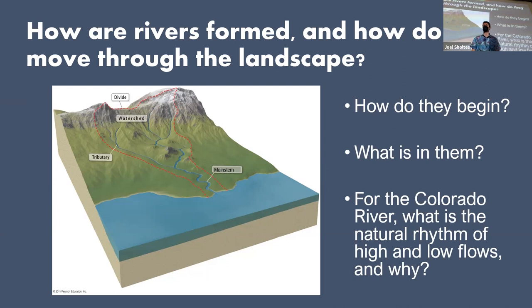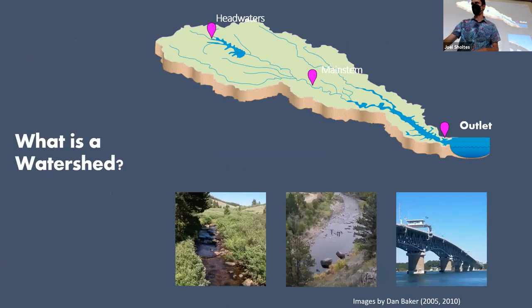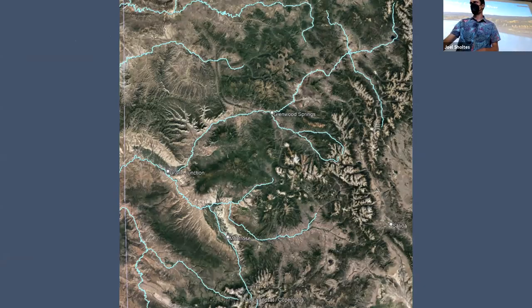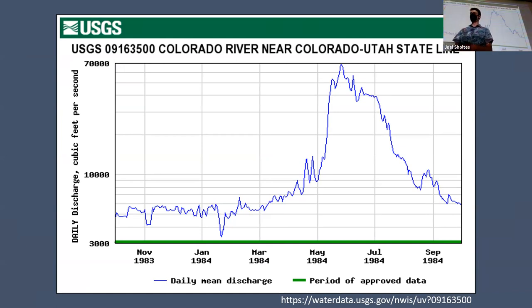Now let's think about the natural rhythm, the high and low of the river. Is the river a constant discharge over the whole year or does it change over time? When does it come up the most? The spring. And why? Snow melts. Here is a hydrograph for the river at the Utah State Line on the Colorado River, and this is one of the bigger years — probably the biggest year we have on record.